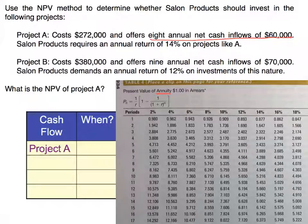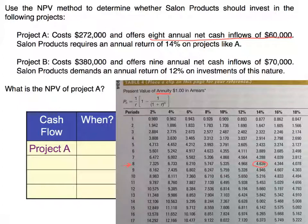There are eight annual periods, so we go to line eight on our annuity table. The return is 14%, so if we scroll over to column 14%, we find the annuity factor to be 4.639. We're going to use this factor in calculating the net present value.